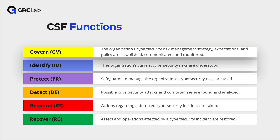After we know what needs safeguarding, the Protect function helps us put in place the necessary measures to secure our information and systems. This includes things like using strong passwords, updating software and ensuring only the right people have access to important information. The Detect function is then about being alert and recognizing when something might be wrong. Detecting involves monitoring our systems for any signs of a cybersecurity event or breach, so we can catch issues as soon as possible.